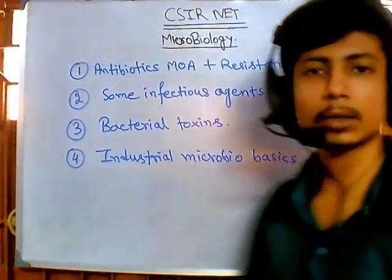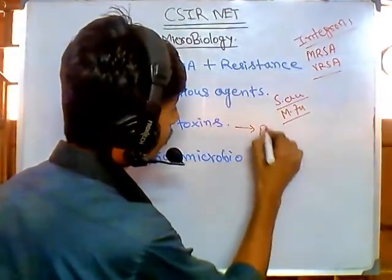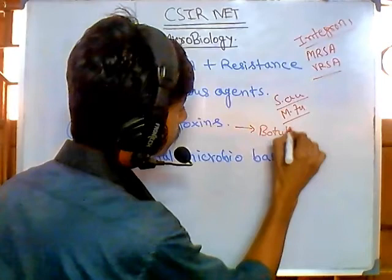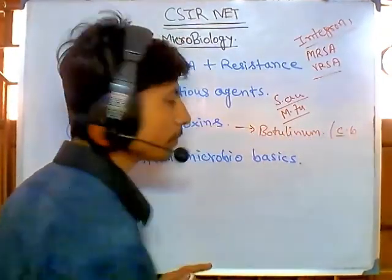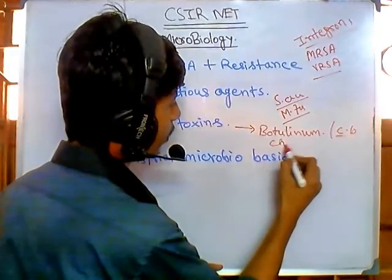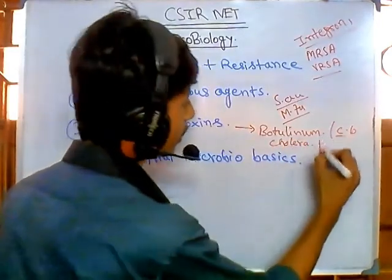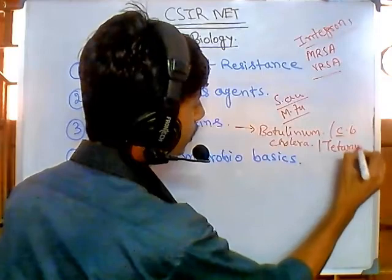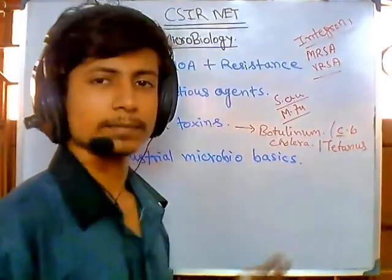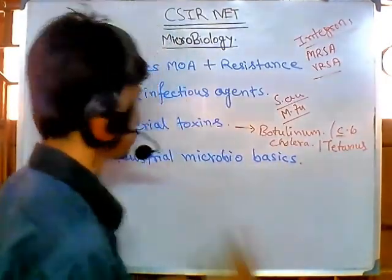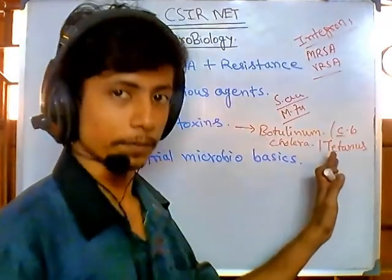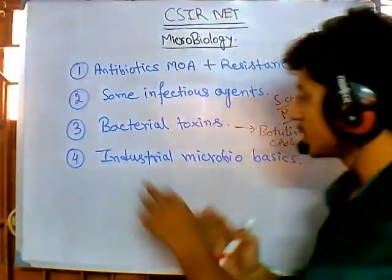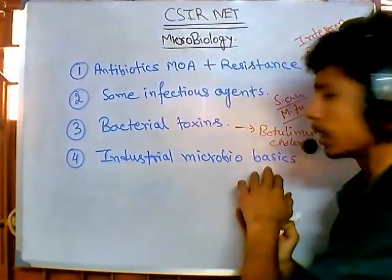The third topic is bacterial toxins, which is very, very important. There are three major toxins: botulinum toxin produced by Clostridium botulinum, cholera toxin, and tetanus toxin. These three are of major importance, and the mechanism of action of all these toxins is very important.